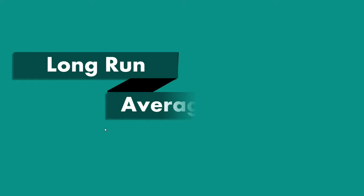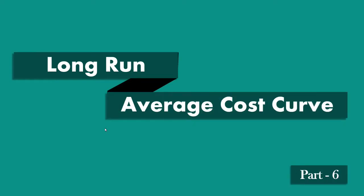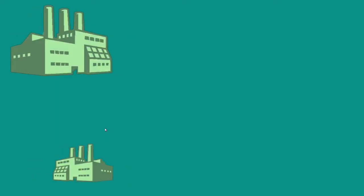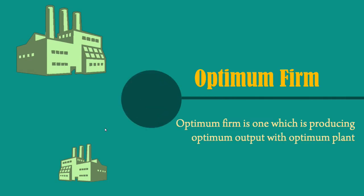Long Run Average Cost Curve. Optimum firm is one which is producing optimum output with optimum plant. In other words, a firm becomes an optimum firm when it is operating at the minimum point of the Long Run Average Cost Curve.